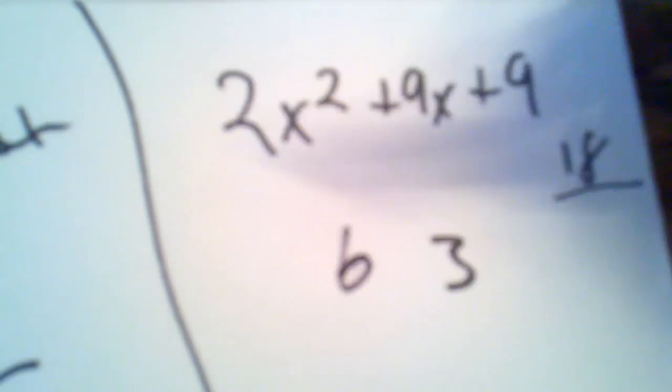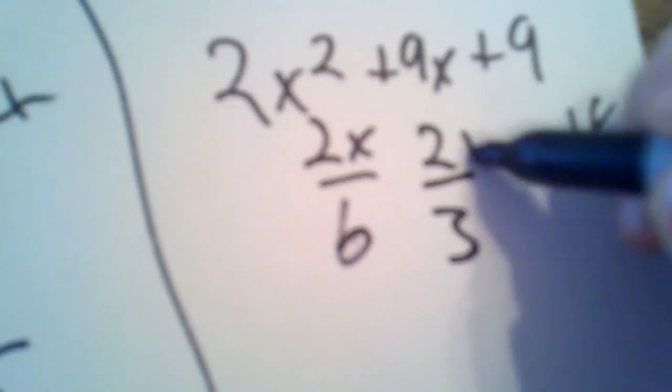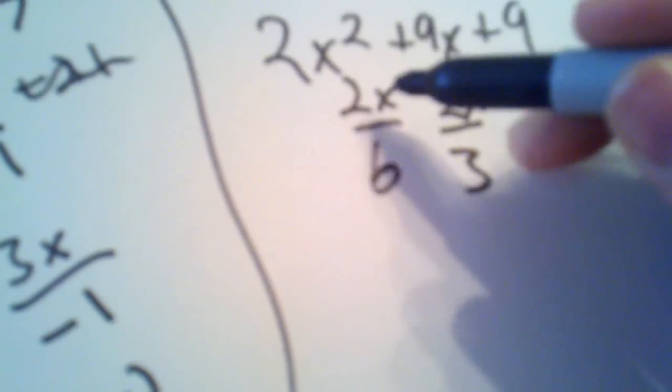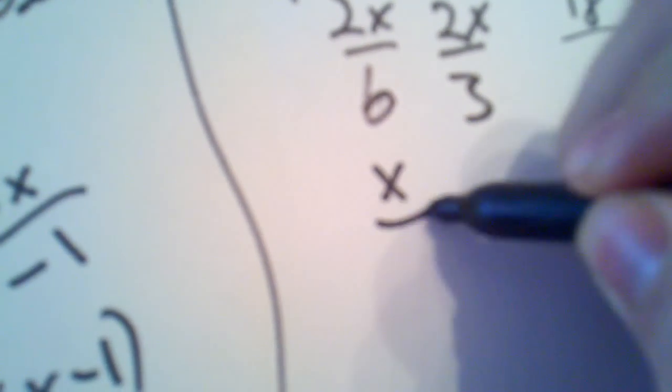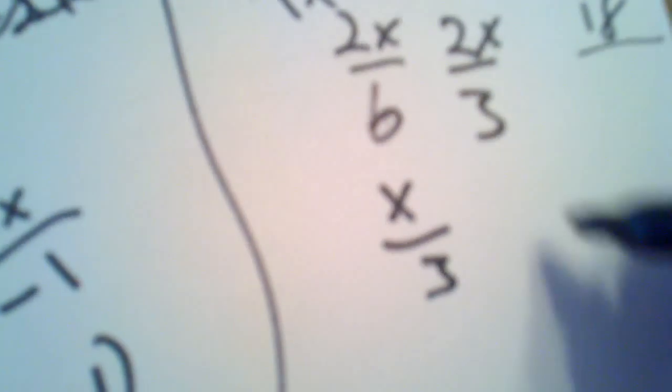Now, again, we don't know how to divide up this 2 up here, so we're just going to put it up over both of them. Now, this can be divided by 2 to equal an x over 3, and this cannot be simplified any further, so it stays the 2x over 3.